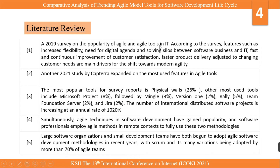In the literature review, we cover five papers. The first paper is a 2019 survey on agile and agile tools used in information technology. It elaborates the features of agile tools: increasing flexibility, reducing costs, continuous improvement, customer satisfaction, fast product delivery, and a shift towards modern agility. The second paper is also about agile tools and is a study from 2021.